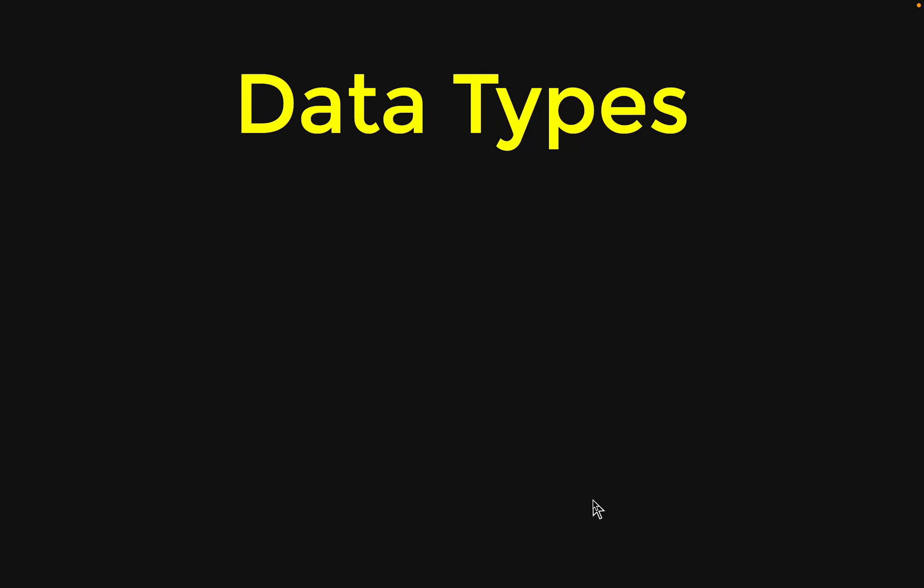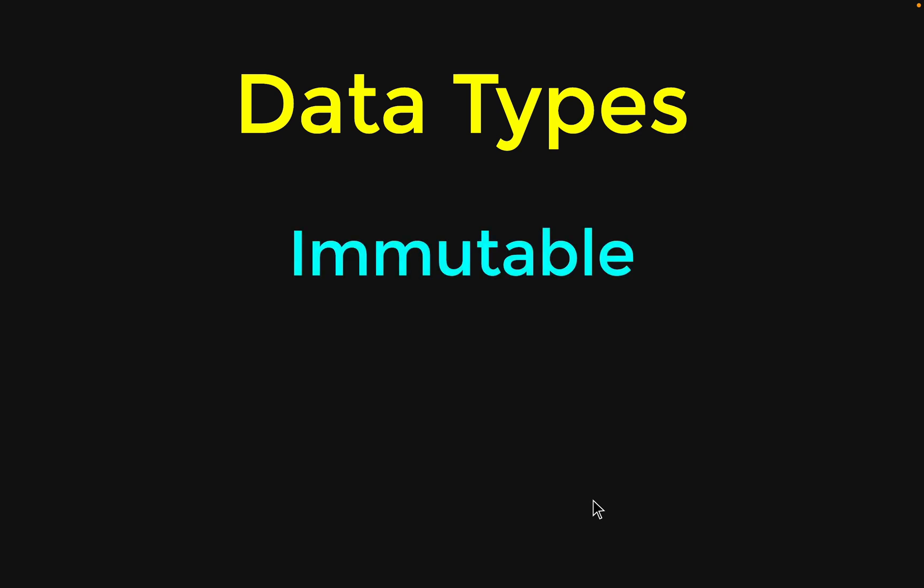Let us try to learn more about the different data types in Elixir. The first thing I wanted to remind you is that all of the data types in Elixir are immutable. In common terms, what I mean to say is all of the data types inside Elixir are constants.